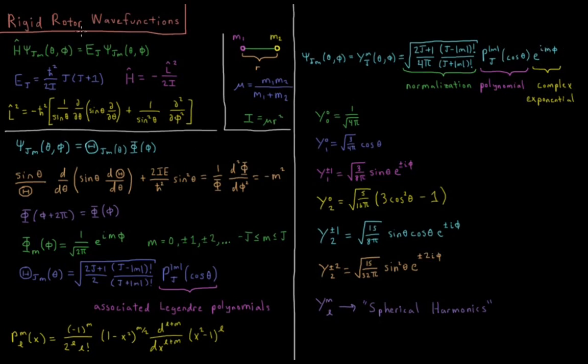So what does this give us for actual values of j and m? So j starts at 0. It goes up to infinity as an integer. m can be any value between j and minus j which is an integer. So y 0 0 is a constant 1 over square root of 4 pi. y 1 0, j equals 1 m equals 0, is a normalization constant times cosine theta. y 1 plus or minus 1, so j equals 1 m equals plus or minus 1, equals normalization constant times sine theta times e to the plus or minus i phi.